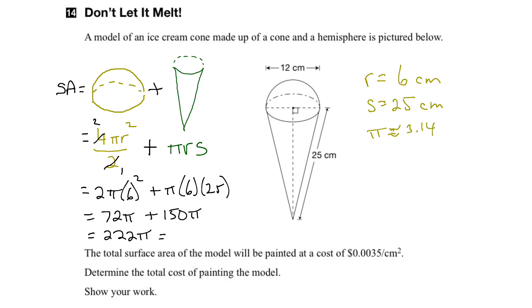So this would become 222 times 3.14, which equals 697.08, and the units would be centimeters squared.